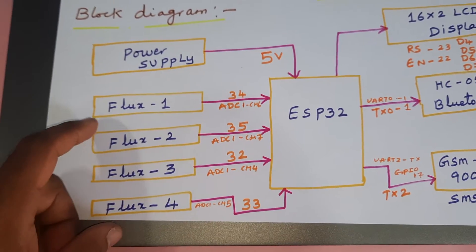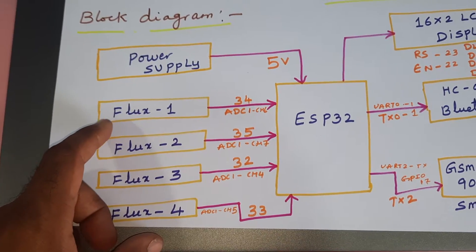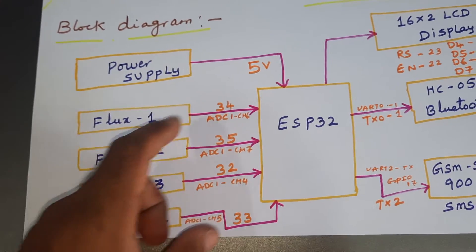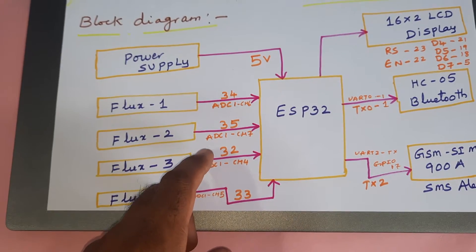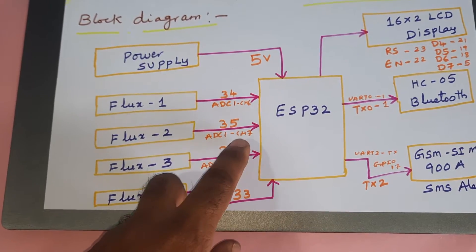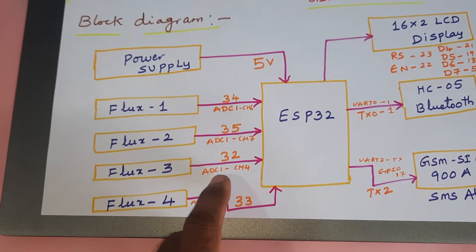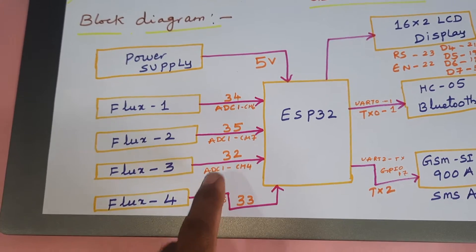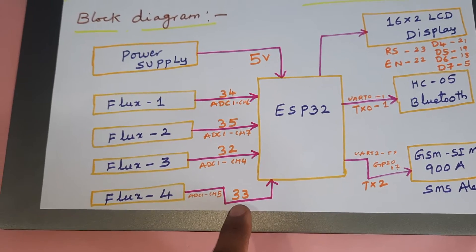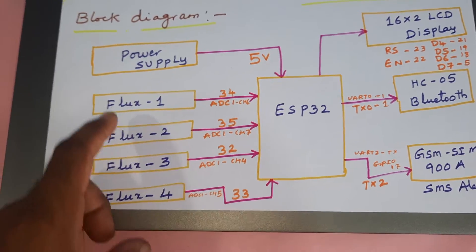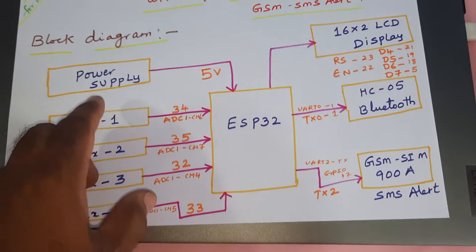In this project we are using four flux sensors — 2.2 inch flex sensors — connected with ADC channel 6 GPIO 34 pin, ADC1 channel 7 GPIO 37/35 pin, ADC1 channel 4 GPIO 32 pin, and ADC channel 5 GPIO 33 pin. Those are the ADC sensors connected to the ADC pin numbers.